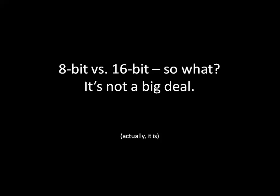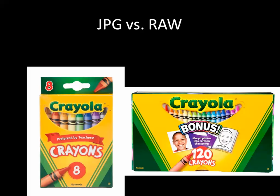So, 8-bit versus 16-bit — so what? Actually, it is a big deal. I borrowed these from the Crayola website. On the left, you have the box of 8 Crayola crayons — yellow, green, red, orange, purple, etc. On the right, you have a box of 120 crayons. So instead of having just one yellow, you have three or four. You have four or five blues — a greater variety of colors, more variability, more definition.